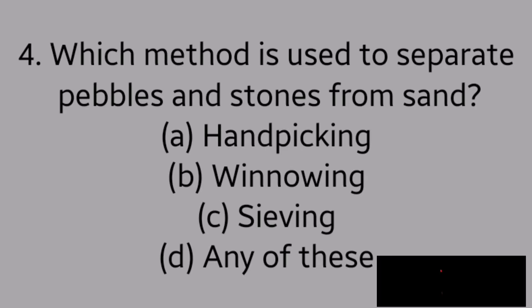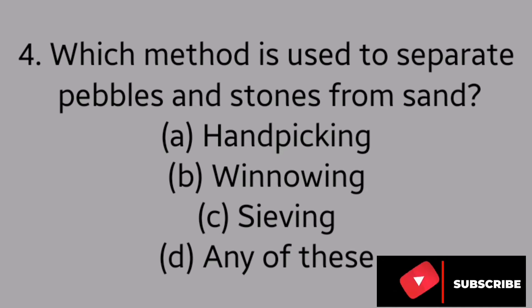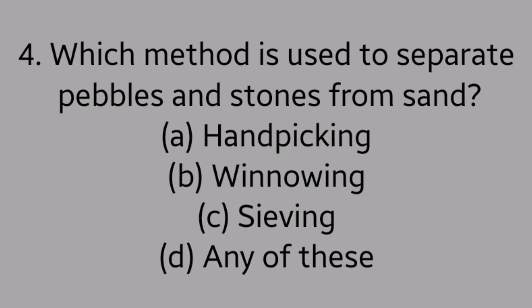Question number 4. Which method is used to separate pebbles and stones from sand? Option A. Handpicking, option B. Winnowing, option C. Sieving, option D. Any of these. Answer is option C. Sieving.